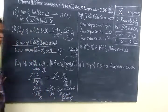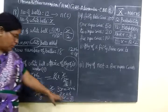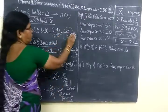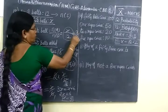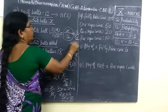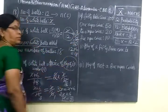So number of white balls is equal to 3. If you substitute 3, you will have probability 3 by 12. So if you cancel you get 1 by 4.